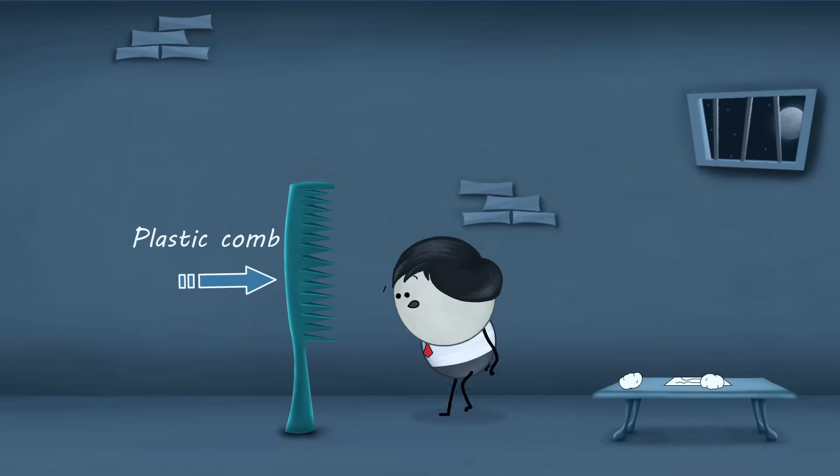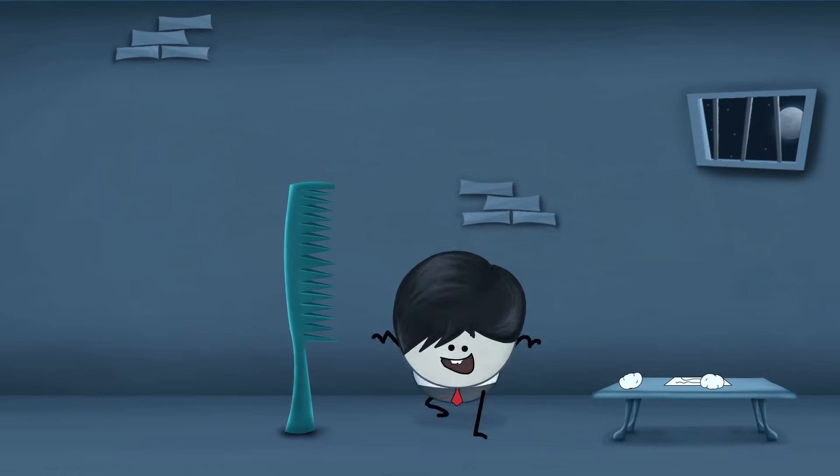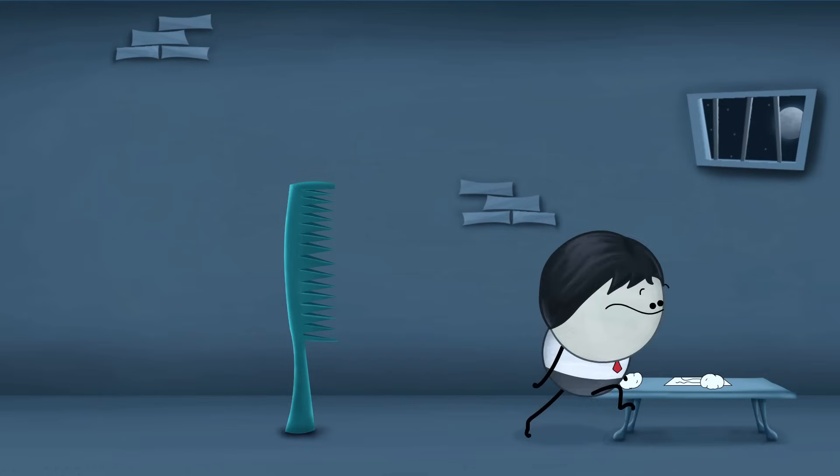So, was the plastic comb initially electrically neutral or electrically charged? Initially, the plastic comb was electrically neutral. That means it had equal number of positive and negative charges.